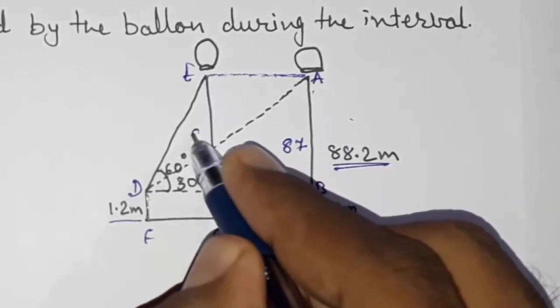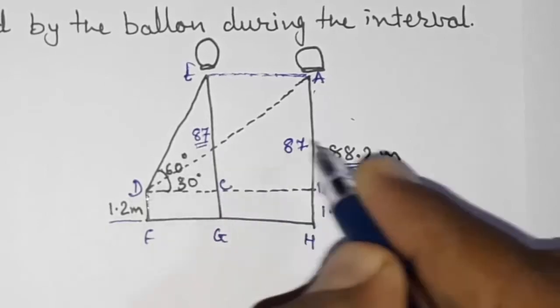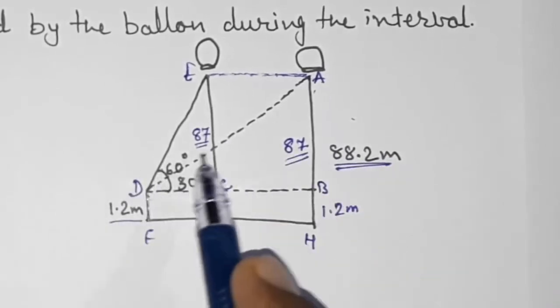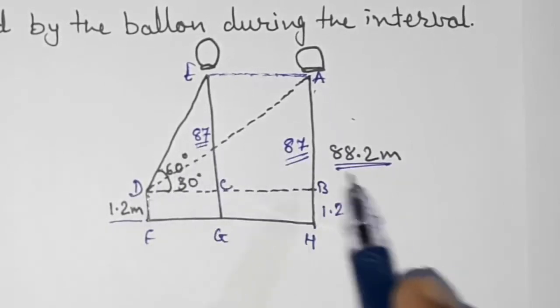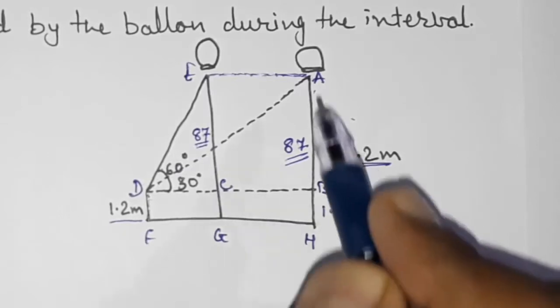So this we want AB and here also EC will be also 87. Generally my students are making this mistake: they forget to subtract this 1.2 from this.